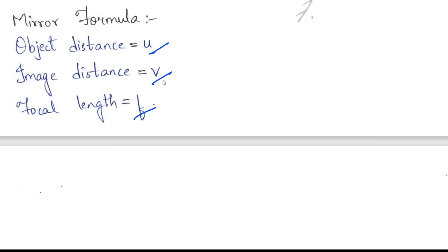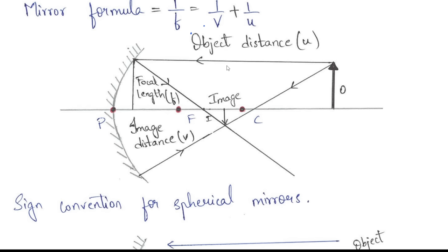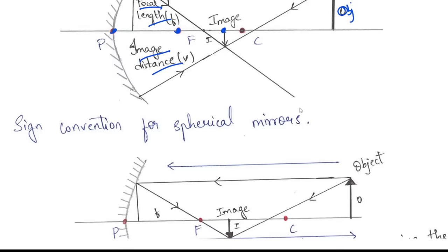Mirror formula. To use the mirror formula we need three things: object distance u, image distance v, and focal length f. The mirror formula is: 1/f = 1/v + 1/u. Object distance is the distance from the object to the pole, image distance is the distance from the image to the pole, and focal length is the distance between the pole and the focus.